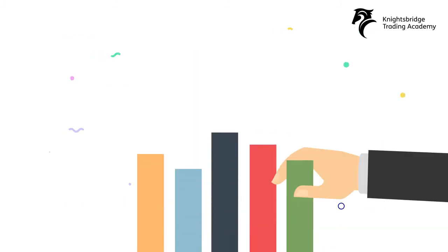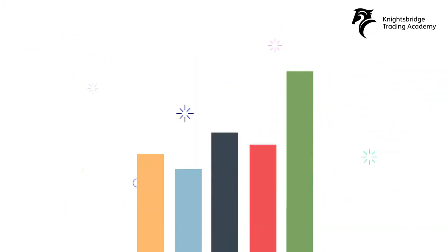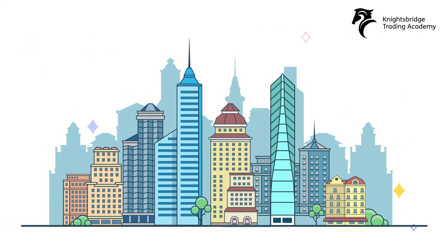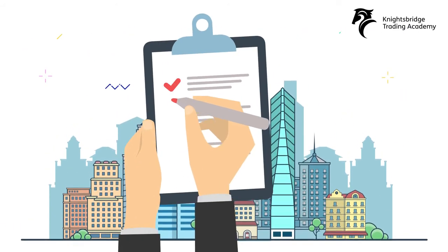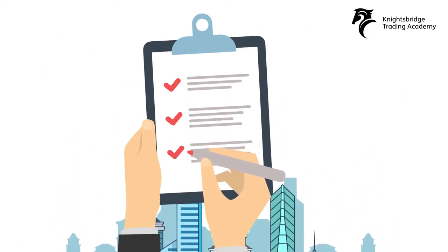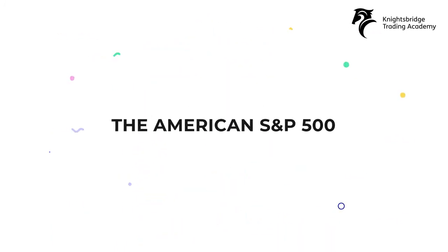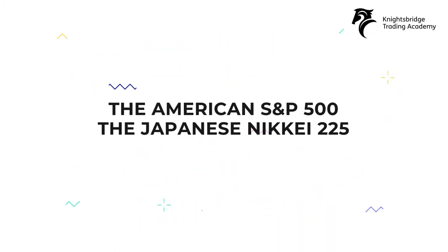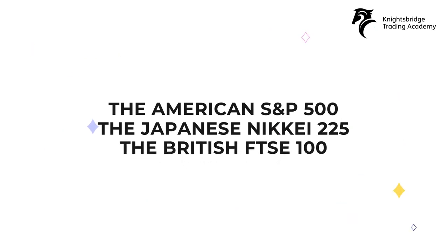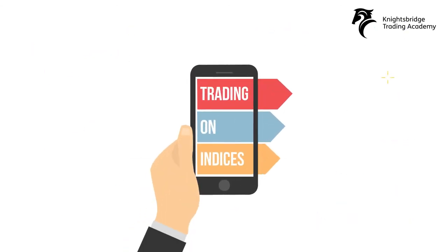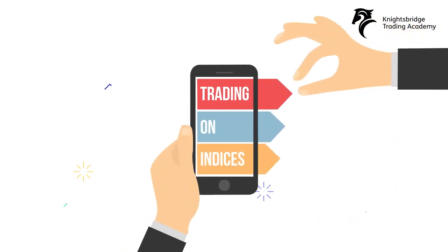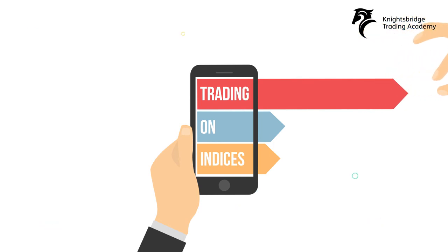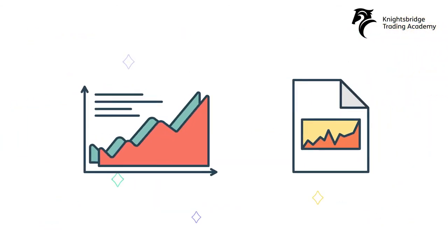The most regularly quoted market indices are national indices, composed of the stocks of large companies listed on a nation's largest stock exchanges, such as the American S&P 500, the Japanese Nikkei 225 and the British FTSE 100. Trading on indices is a great way to speculate on the performance of each overall stock market, as opposed to selecting individual stocks and shares.